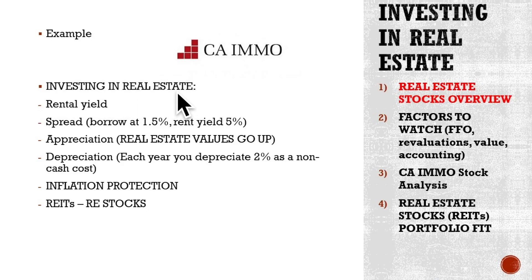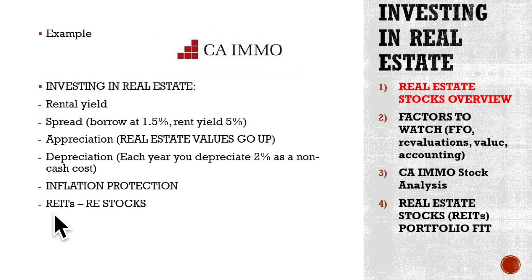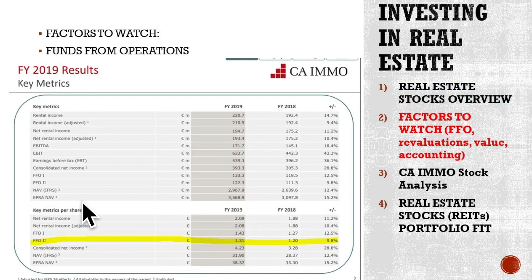When it comes to investing in real estate or real estate vehicles, rental yields are what investors focus on. The spread — if they can borrow at 1.5%, like Ka Immobilien can, and the rent yield is 5%. Appreciation — real estate values should go up. But there is also depreciation, 2% non-cash costs that lowers your taxes. There should also be inflation protection. And then we have REITs and real estate stocks, and you have to see what fits your investment strategy.